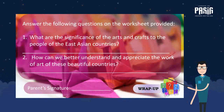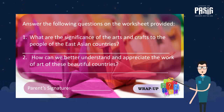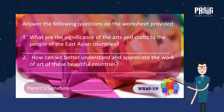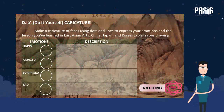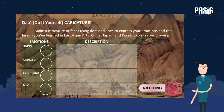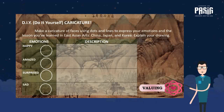For the wrap-up activity, answer the following questions on the worksheet provided. Number 1: What are the significance of the arts and crafts to the people of the East Asian countries? Number 2: How can we better understand and appreciate the work of art of these beautiful countries? For our last activity entitled 'Do-It-Yourself Caricature,' make a caricature of faces using dots and lines to express your emotions and the lesson you have learned in East Asian arts. Explain your drawing.